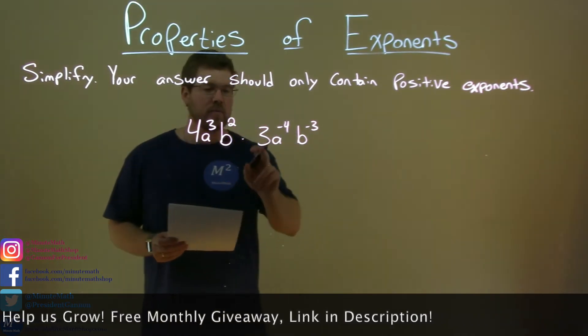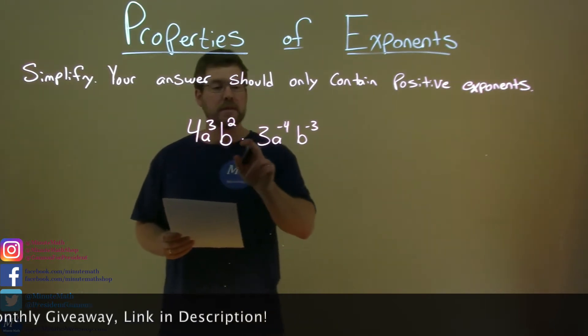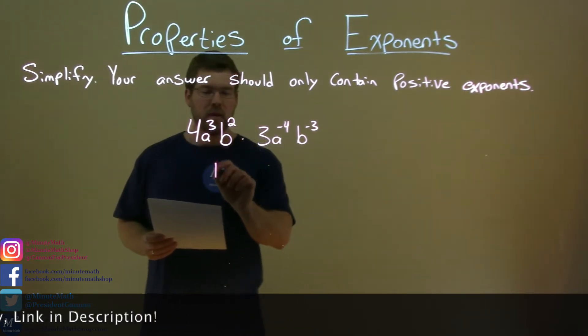First thing I want to do is look at my coefficients and multiply them. 4 times 3 is 12. Let's bring that down.